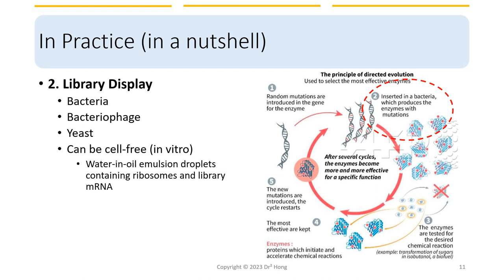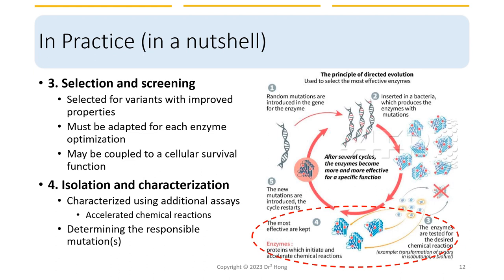The screening or selection process begins with the library, which is screened or selected for variants with improved properties using specific assays or selection processes. For example, the library may be screened for variants with increased activity, stability, or specificity using a high-throughput assay or selection system. The selection step must be adapted for each enzyme and may be coupled to a cellular survival function if cells are used in the process.